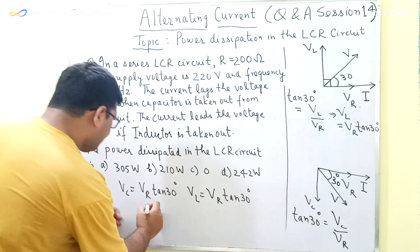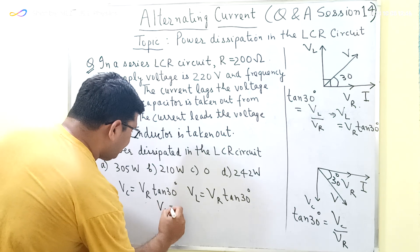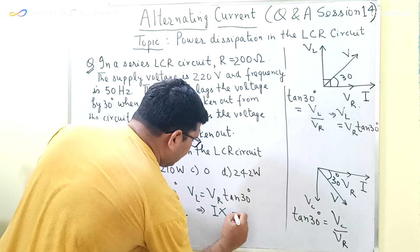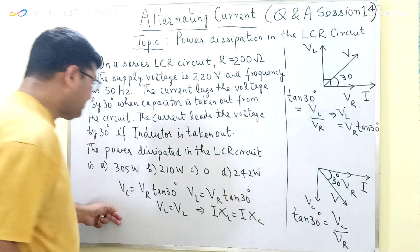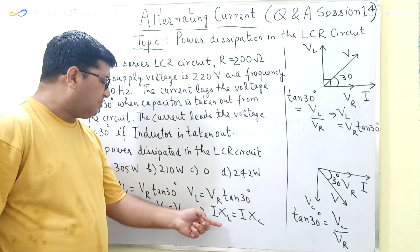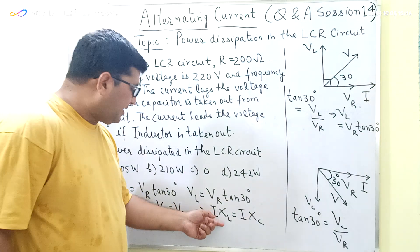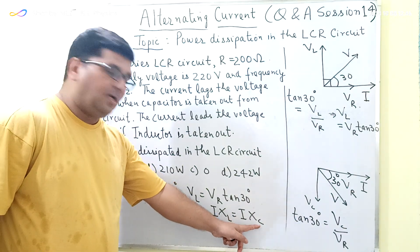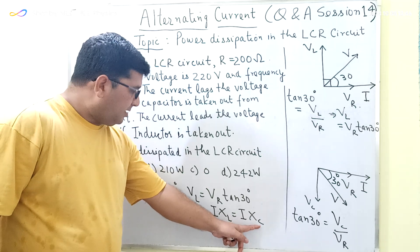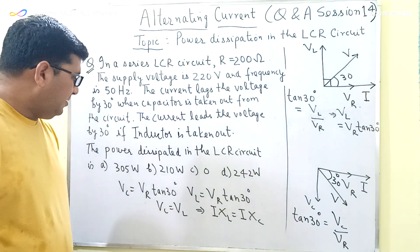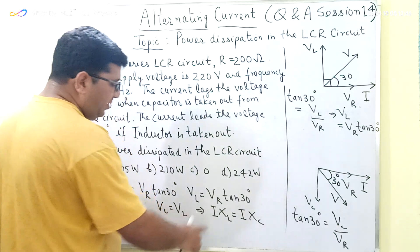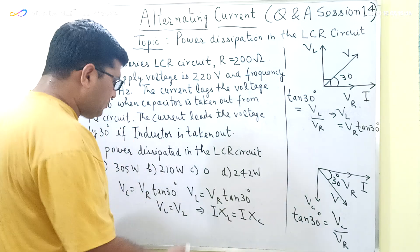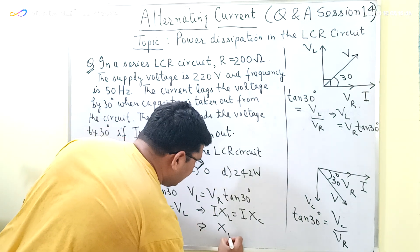Since VC = VL, it implies that I·XL = I·XC, because the voltage across the capacitor is the product of the current and the capacitive reactance, and VL is the product of the current and the inductive reactance of the inductor. So in this case we see that XL = XC.